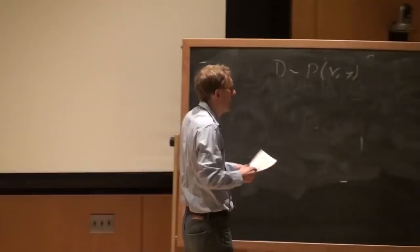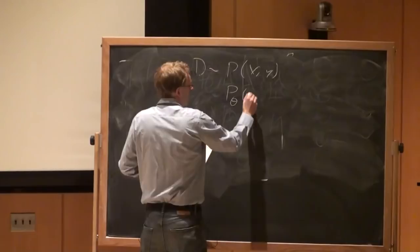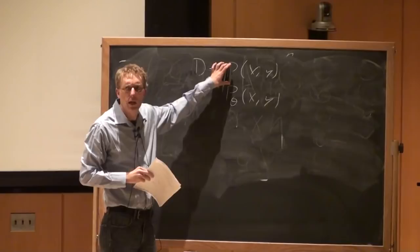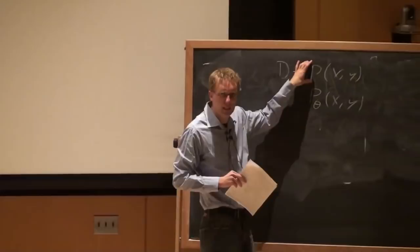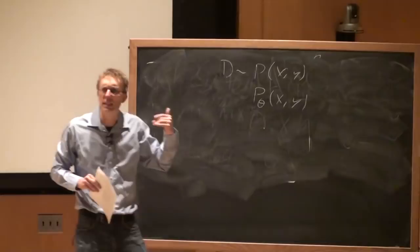We could define some distribution that we understand, that has parameters theta, and we try to fit this distribution to match the one we don't know. Once we have this distribution, we could use the Bayes optimal classifier. All our problems would go away if we had access to this distribution — we'd get perfect prediction in the sense that we couldn't do any better.